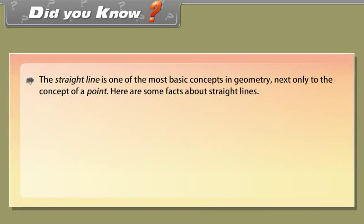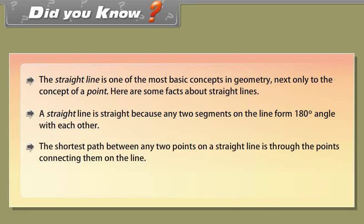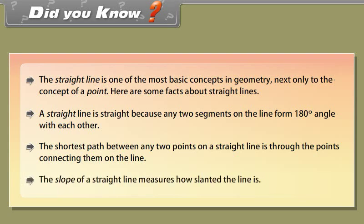Did You Know? The straight line is one of the most basic concepts in geometry, next only to the concept of a point. A straight line is straight because any two segments on the line form a 180-degree angle with each other. The shortest path between any two points on a straight line is through the points connecting them on the line. The slope of a straight line measures how slanted the line is.